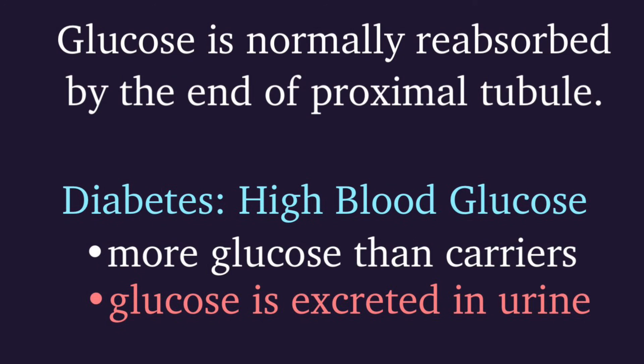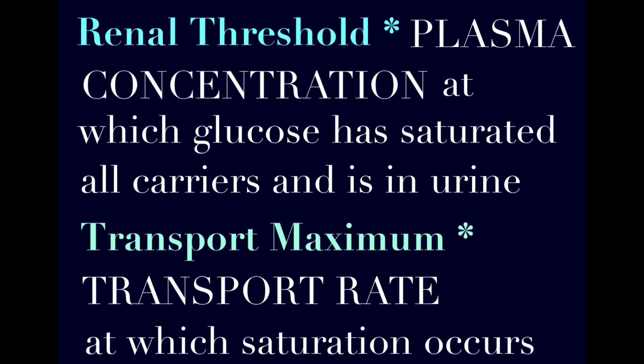At normal plasma glucose levels, all the glucose that enters the nephron is reabsorbed before it reaches the end of the proximal tubule. But in the case of diabetes, blood sugar levels are out of control and glucose is filtered faster than it can be reabsorbed. All the transporters get saturated with glucose, but since glucose doesn't wait in line for the next available transporter, it keeps moving and gets excreted in the urine. The plasma concentration at which glucose first shows up in the urine is called the renal threshold for glucose, and the transport rate at which glucose has saturated all of the carriers is called the transport maximum. Under normal conditions, filtration of glucose equals reabsorption — it's only when the renal threshold is exceeded that glucose spills over into the urine.